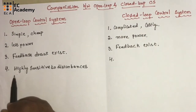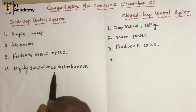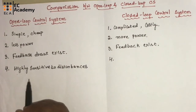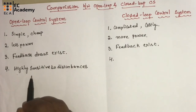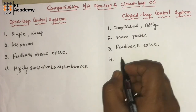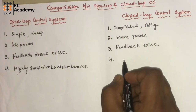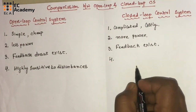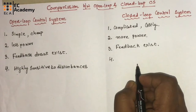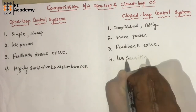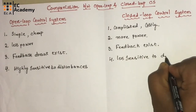The open loop control systems are highly sensitive to disturbances because they do not have any feedback or any control element. Since the closed loop control system has control elements as well as feedback, they are less sensitive to disturbances.